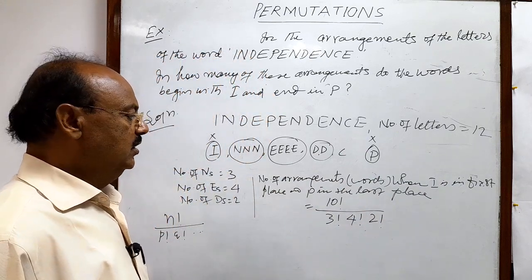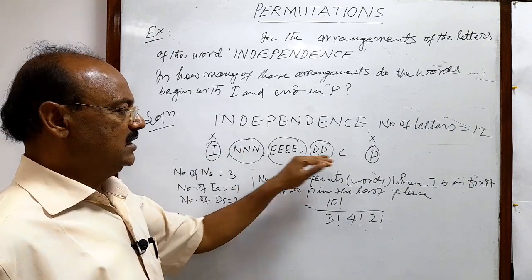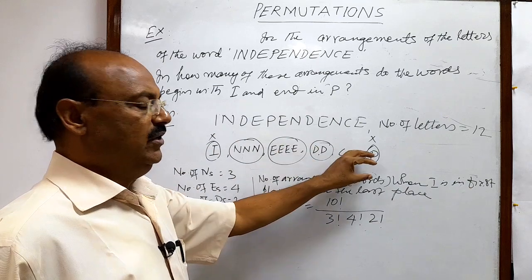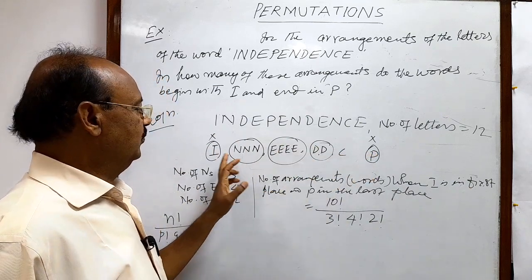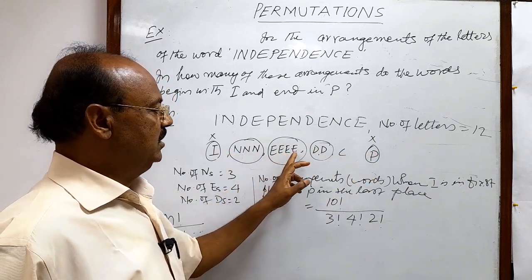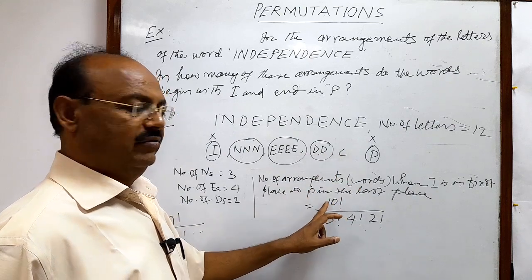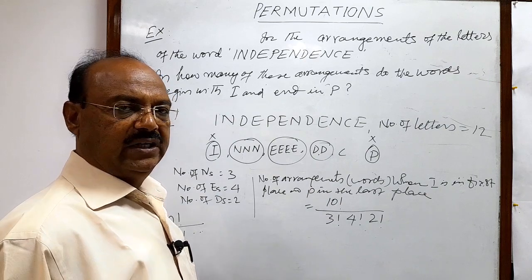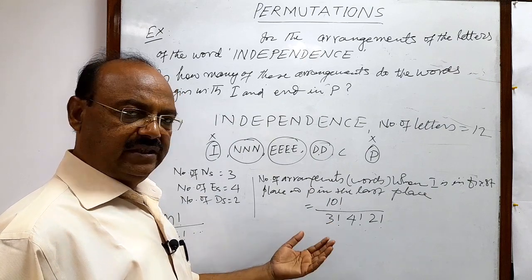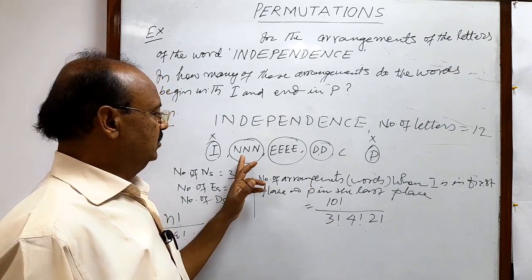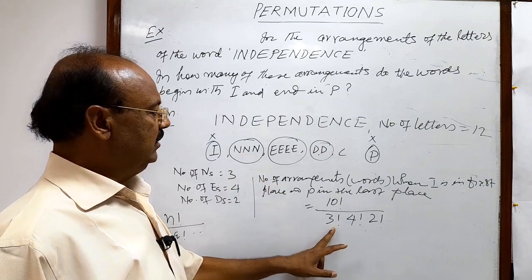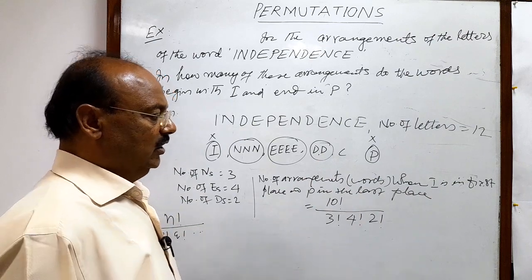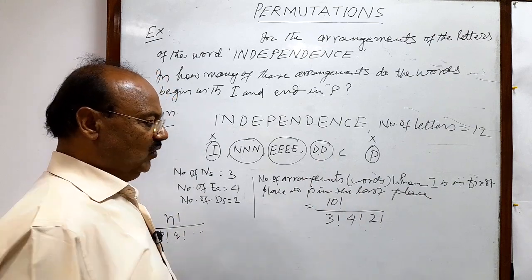I hope you understood it. Total number of objects in this case — when we are not considering I and P in the list because their places have been fixed — so remaining are 10. So 10 factorial, divided by the factorials of the numbers of like objects: 3 N's so 3 factorial, 4 E's so 4 factorial, 2 D's so 2 factorial.